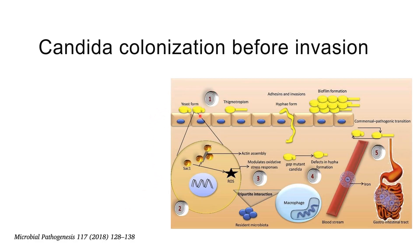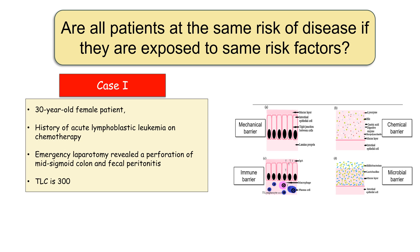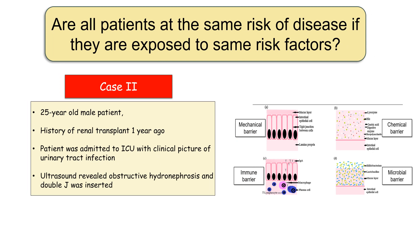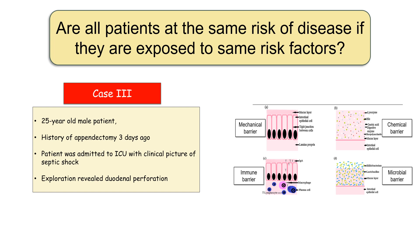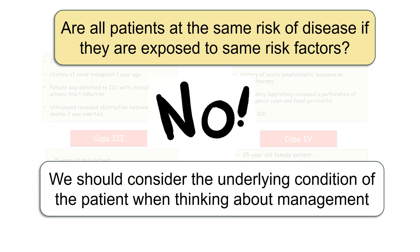Candida needs to colonize the surface and change from the yeast form to the hyphae form before it can invade the body; ICU stay more than 7 days is therefore a very important risk factor allowing time for colonization. Not all patients are at the same risk: Case 1 has a gut perforation and a count of 300, impairing both mechanical and immune barriers. Case 2 had a renal transplant, impairing the immune barrier. Case 3 has a duodenal perforation, disrupting the mechanical barrier. Case 4 has all barriers intact. We should consider the underlying condition of each patient when planning management.